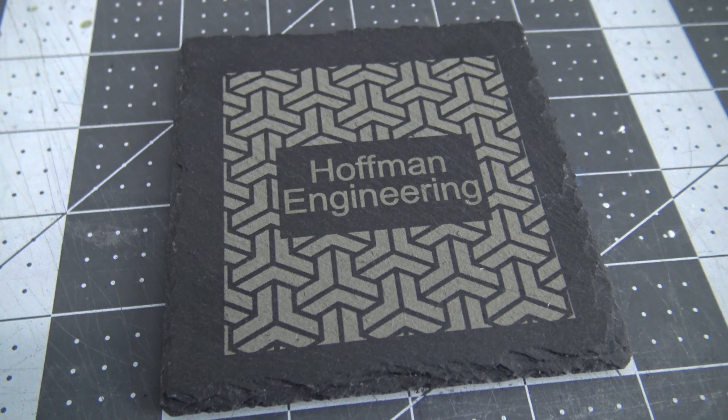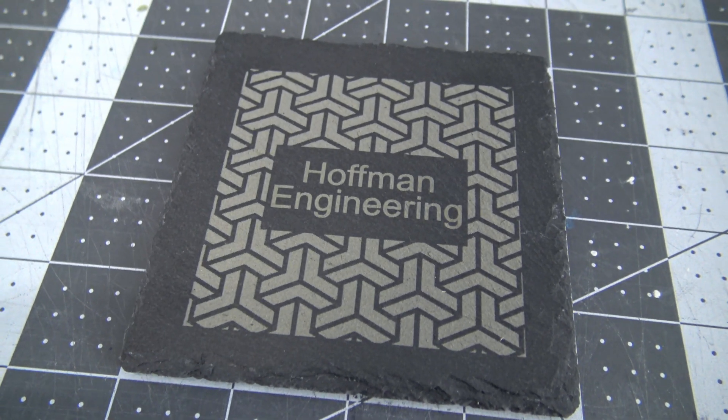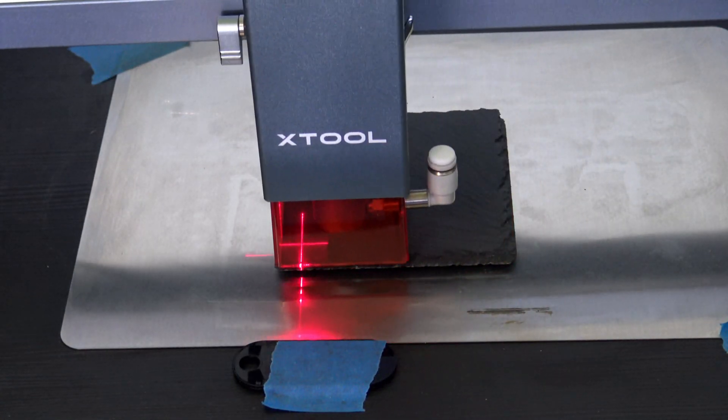Next up is slate. Natural stones like this slate coaster works well, and gives a good looking effect when engraved. The positioning laser is very helpful in making sure your material is aligned correctly.